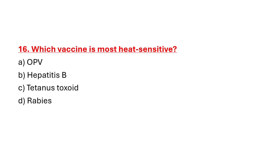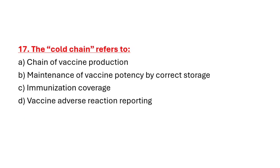Question 16: Which vaccine is most heat sensitive? Option A: OPV. Option B: Hepatitis B. Option C: Tetanus Toxoid. Option D: Rabies. Correct answer is Option A: OPV.